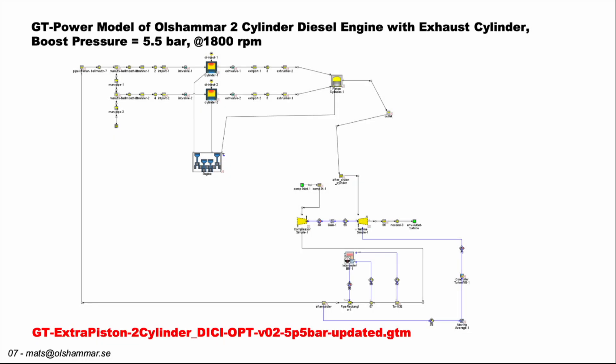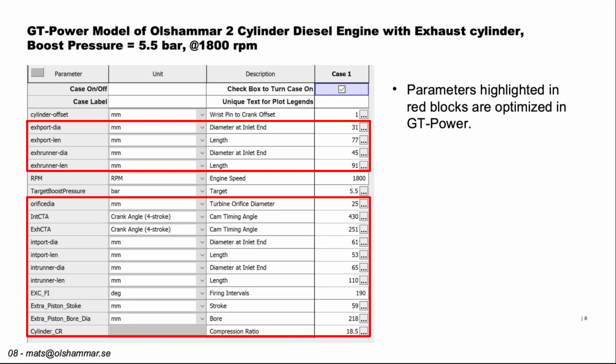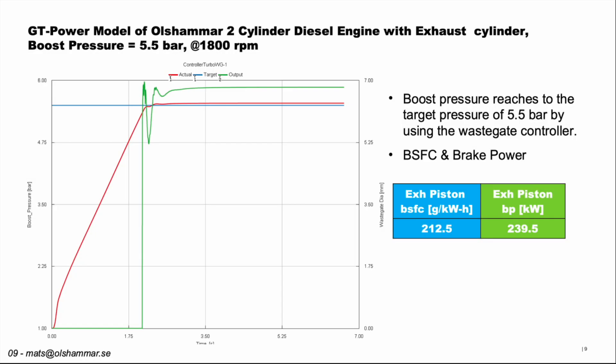Here we have added an exhaust cylinder and set it to the same boost pressure and same RPM. You have a different red text down below showing the setup for that one. We have some more variables to optimize, and this has also reached a stable pressure of 5.5 bar. With this configuration we get 212.5 grams per kilowatt hour in fuel consumption and 239.5 kilowatts in power.